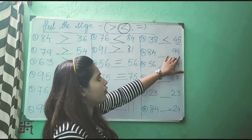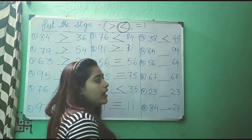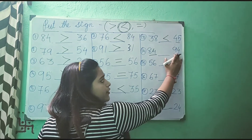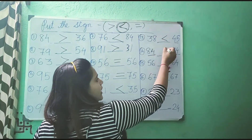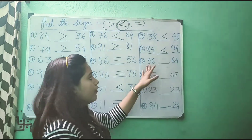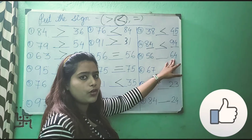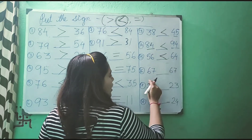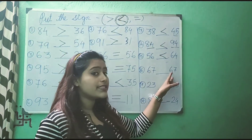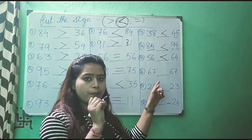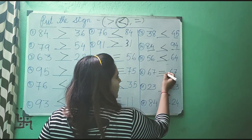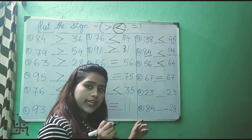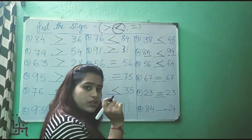Next, 84 and 94 — which is the smaller one and which is the bigger one? 94 is the bigger one and 84 is the smaller one. As it is smaller than 94, we will put less than sign here. 56 and 64 — 56 is less than 64, 56 is the smaller one, that is why we will put less than sign here also. 67 and 67 — both numbers are same, so we will put equals to. 23 and 23 — again, these two numbers are same, so we will put equals to.